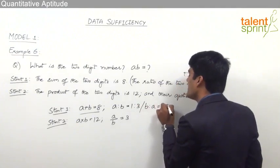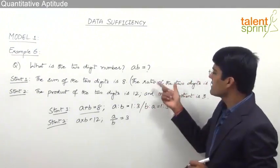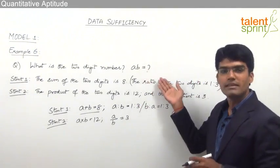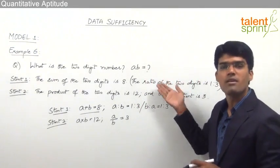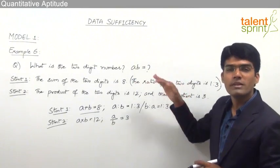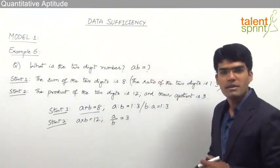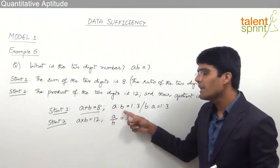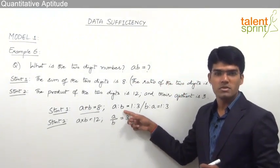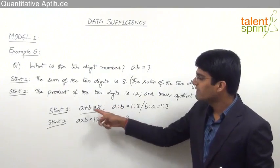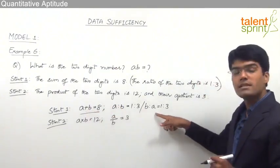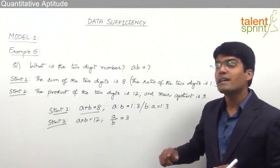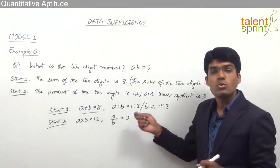Because the statement simply says the ratio is 1 is to 3, but whether it is A to B (tens place to units place) or B to A (units place to tens place) has not been specified. That means there are two possible interpretations: one gives A plus B equals 8 with A to B equals 1 to 3, and the other gives A plus B equals 8 with B to A equals 1 to 3 — yielding two different answers.